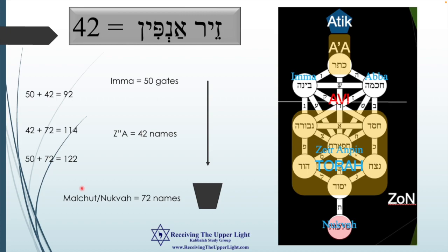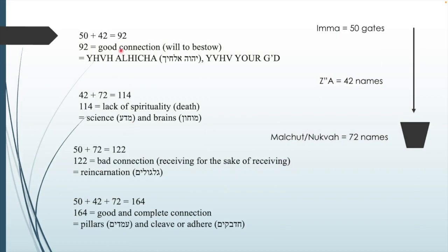Why do we need to know these numbers? Because they tell us the kind of connections we will have with each vibration at those levels. For example, Bina plus Ze'ir Anpin — Tiferet — equals 92, which is a good connection: light coming into a vessel without restriction in a way that won't break anything. And 92 is also the numerical value of Yod-Heh-Vav-Heh Elohekha — 'the Lord your God.' That means there's a good flow of light.